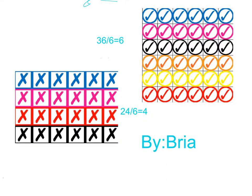Hello everyone, this is my division blog I will be sharing with you today. This one is 36 divided by 6, because it's 36 and we split it into 6 rows, and it equals 6 because there's 6 in each group.